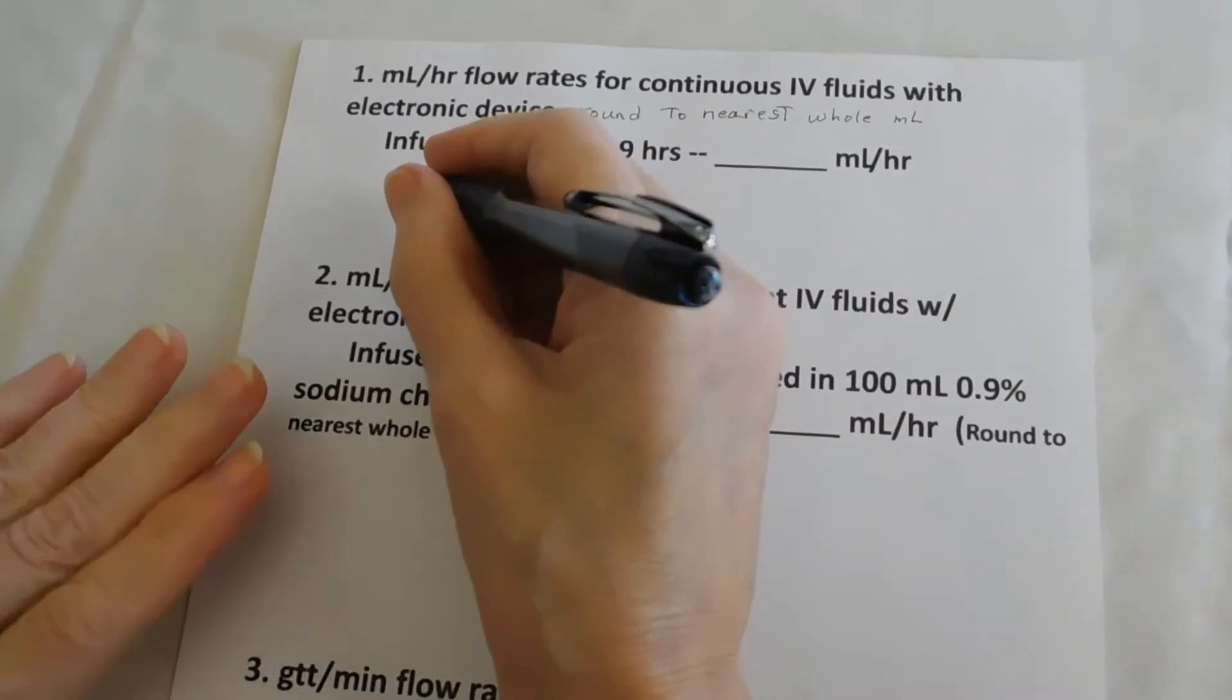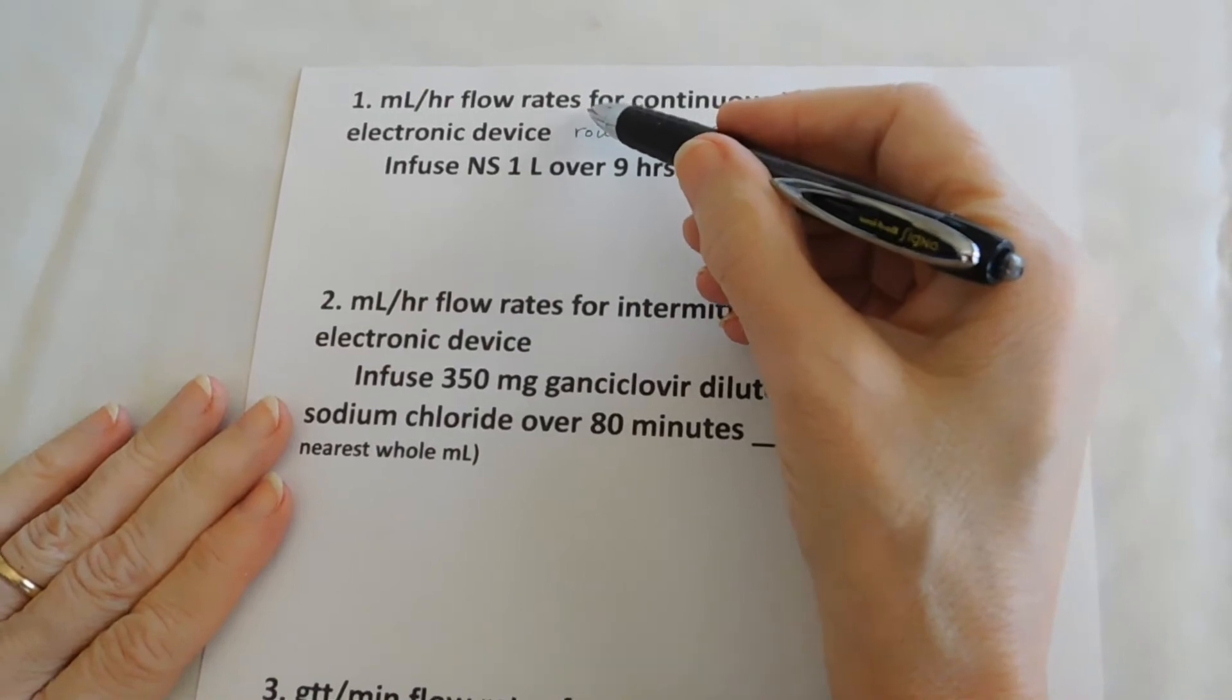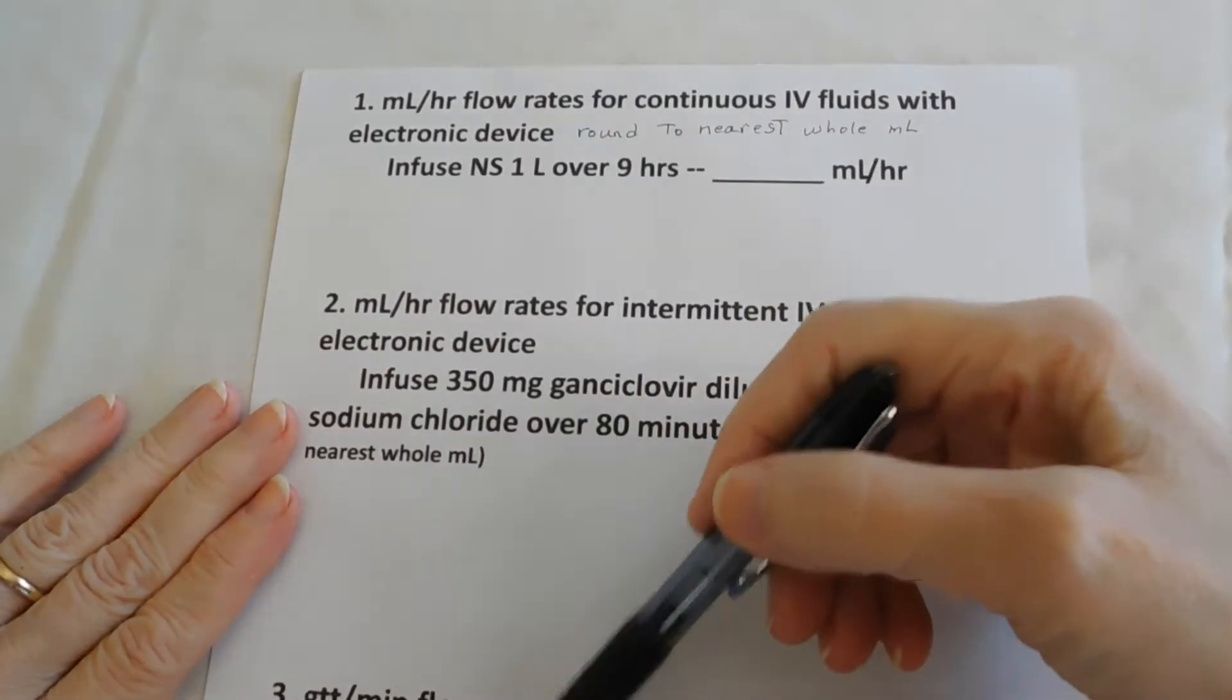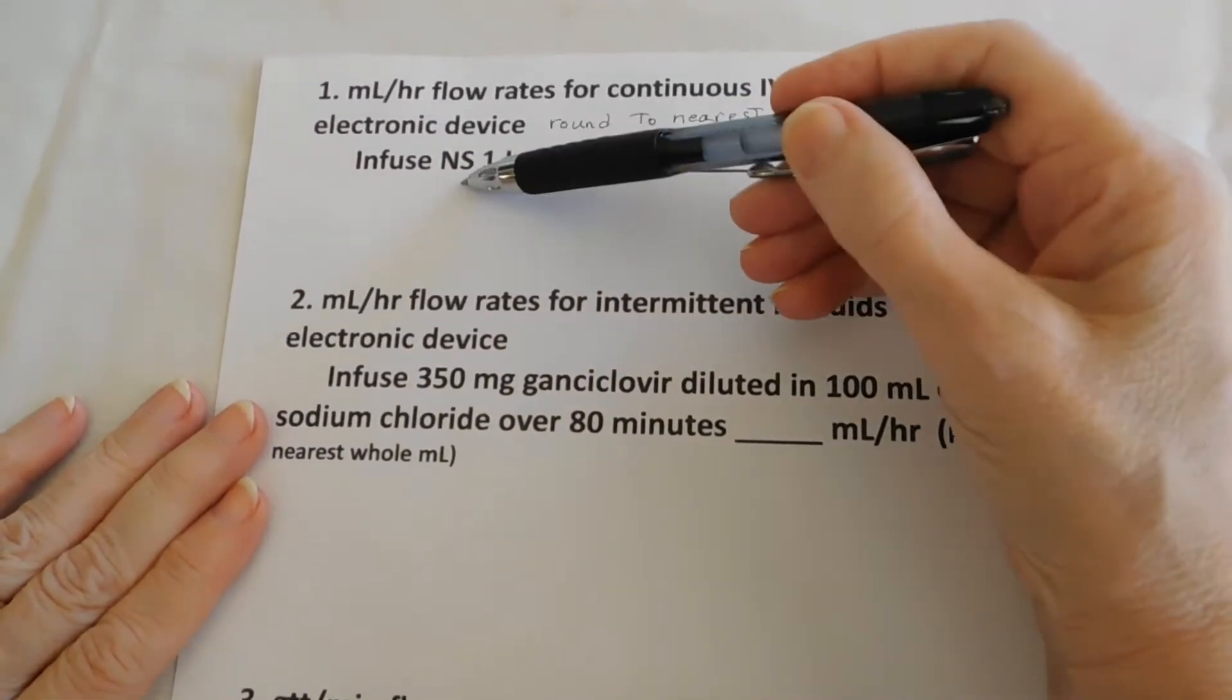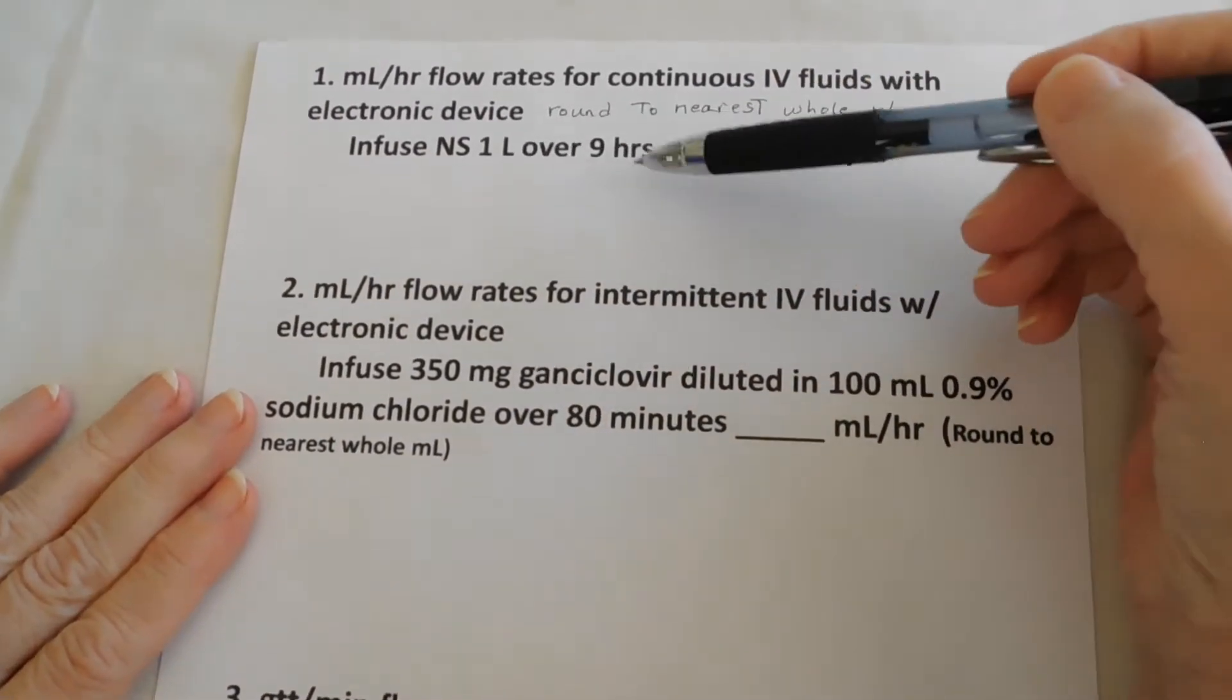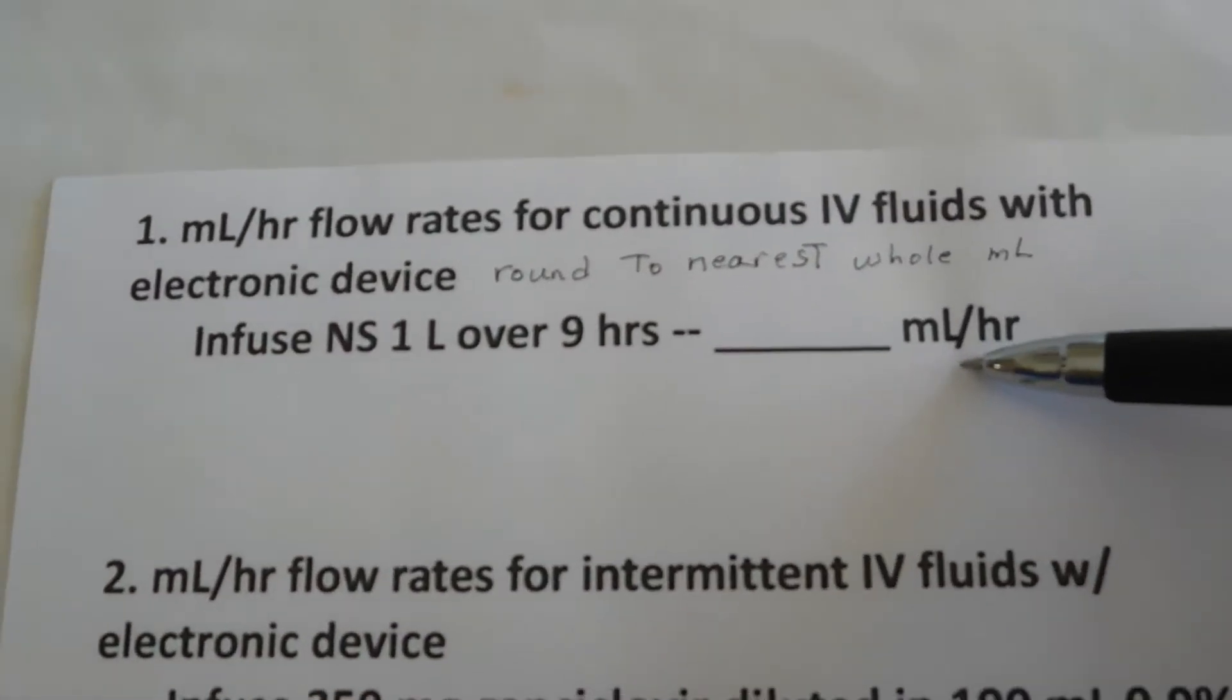We're going to do some IV calculations using dimensional analysis. There are three problems here on this page. So one is we're going to infuse normal saline one liter over nine hours and our units of measure will be milliliters per hour.